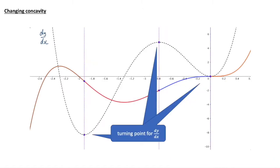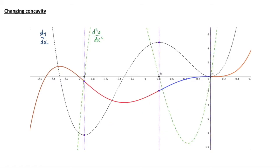Looking at changing concavity, as covered in a previous video: when a function changes from concave to convex or vice versa, we get a turning point for dy/dx. If we plot the second derivative d²y/dx² onto the same picture, then if dy/dx has a turning point, the second derivative has to be zero. We see the points L, M, and N where the second derivative is zero.